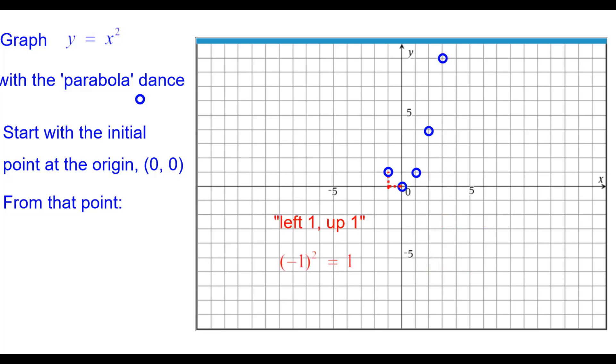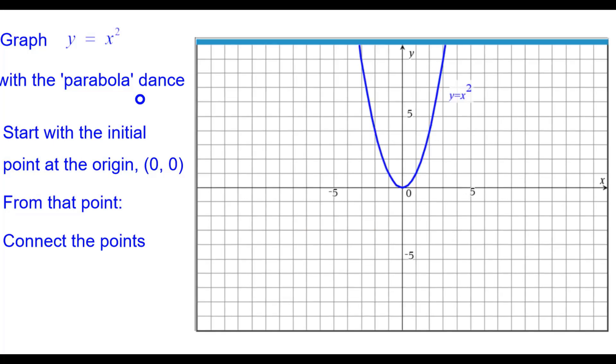Then left one, up one, because negative one squared is one. Negative two squared is four, so left two, up four. And left three, up nine. Connect the points and there's our parabola. Notice the symmetry about the y-axis.